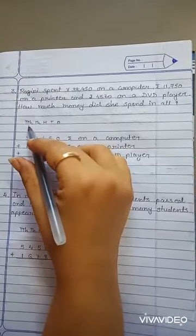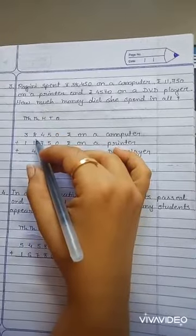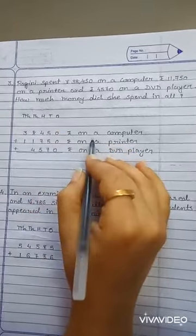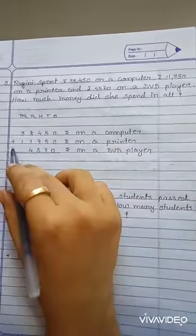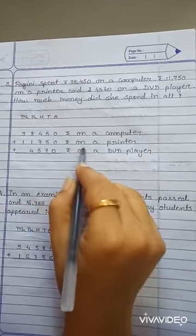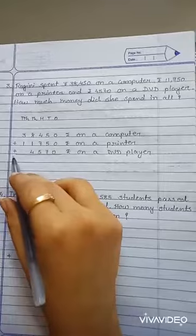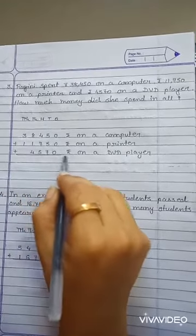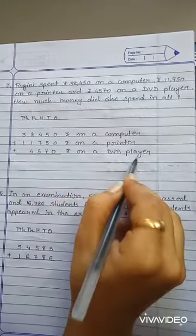One stands on rupees 1 lakh, rupees 10,000. Rupees 38,450 on a computer, plus rupees 11,750 on a printer, plus rupees 4,570 on a DVD player.